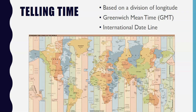Geographers then use the geographic grid system to create time zones. The earth as a sphere is divided into 360 degrees of longitude total. Dividing 360 degrees by 24 time zones — one for each hour of the day — equals 15 degrees. So each 15-degree band of longitude is assigned to a standard time zone.